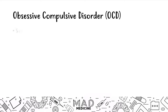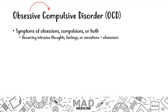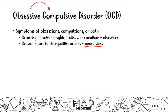Obsessive compulsive disorder, aka OCD, is a disorder characterized by symptoms of obsessions, compulsions, or both. The obsessions are the recurring intrusive thoughts — these thoughts cannot get out of their head. They're always thinking about them and feel like it's drowning their mind. That leads them to relieve the thought by doing a compulsive action. For example, if they think their hands are dirty and filled with germs, they have to go wash their hands — not once, but repetitively over and over again. So the intrusive thought, the obsession, leads to the repetitive action, aka the compulsion. Therefore, you have OCD.